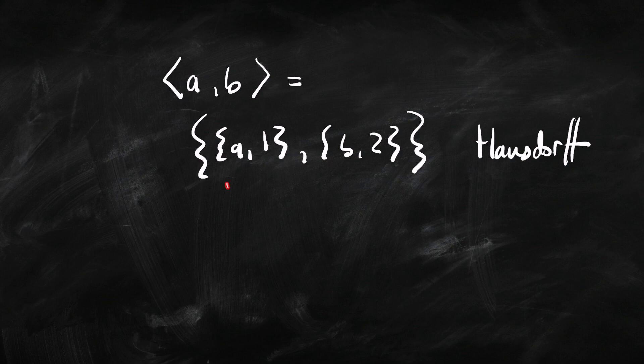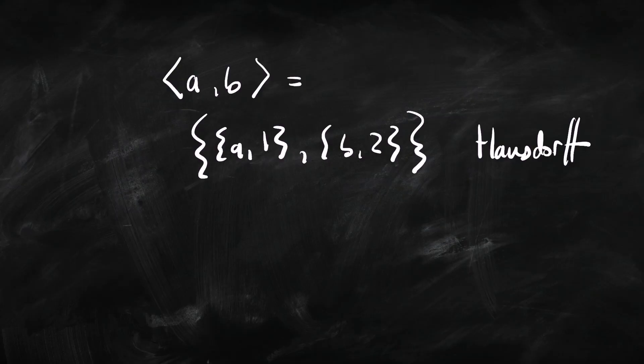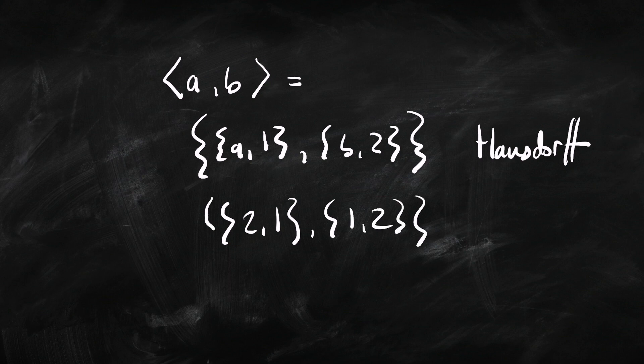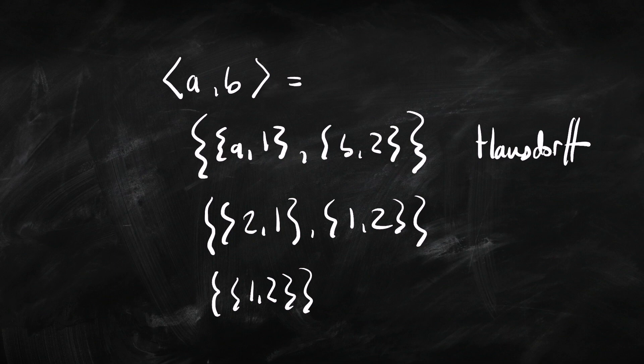There's kind of a problem with this definition, however. It works fine so long as A and B aren't themselves numbers, but imagine if B was the number one and A was the number two. What would we get out of this? We would get a set, and because we don't care about order or repetitions, that set is the same as the set {1, 2}. So all we've got is the set {1, 2}, and that's not going to tell us that A comes first and B comes second. So this definition only works when A and B aren't numbers.